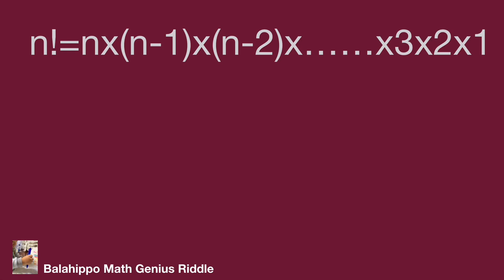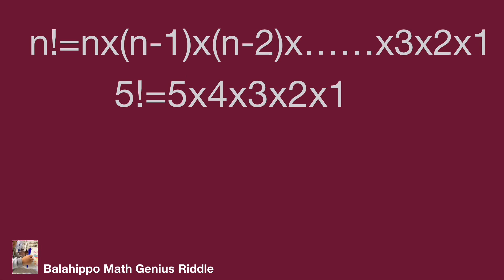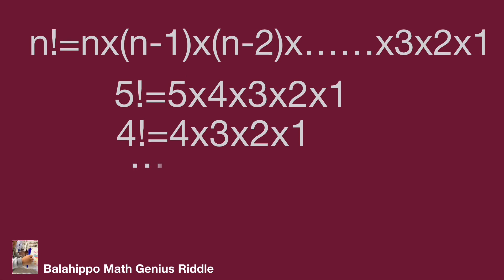Take the example: 5 factorial equals 5 times 4 times 3 times 2 times 1. Similarly, 4 factorial equals 4 times 3 times 2 times 1. Also, 1 factorial equals 1, and by definition, 0 factorial equals 1.